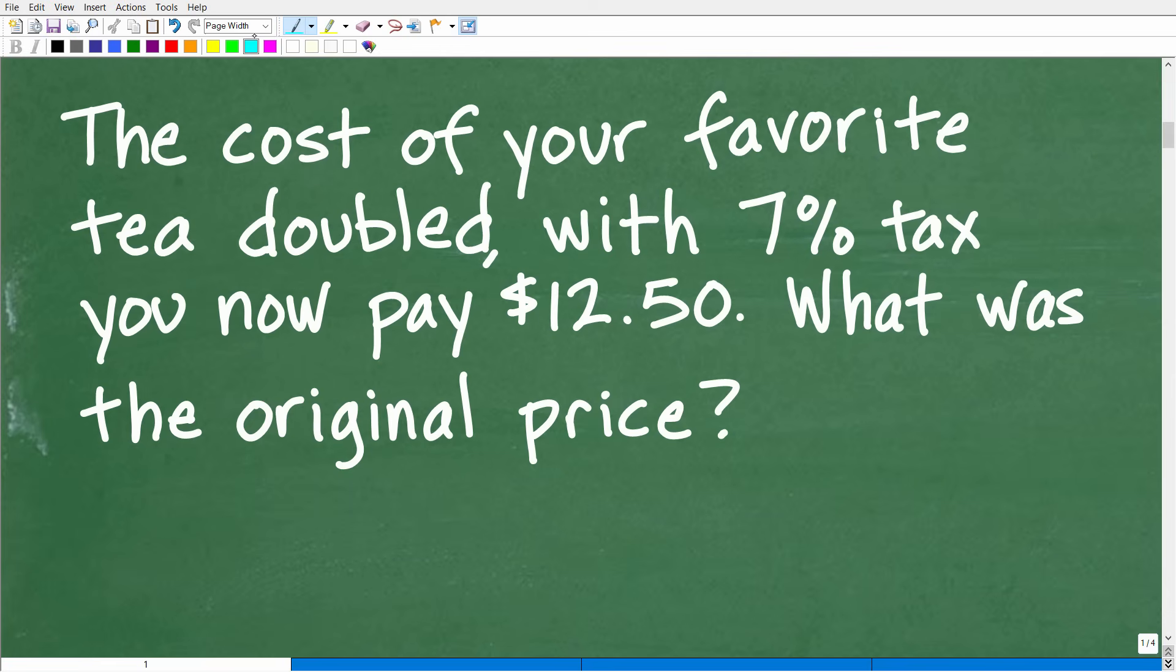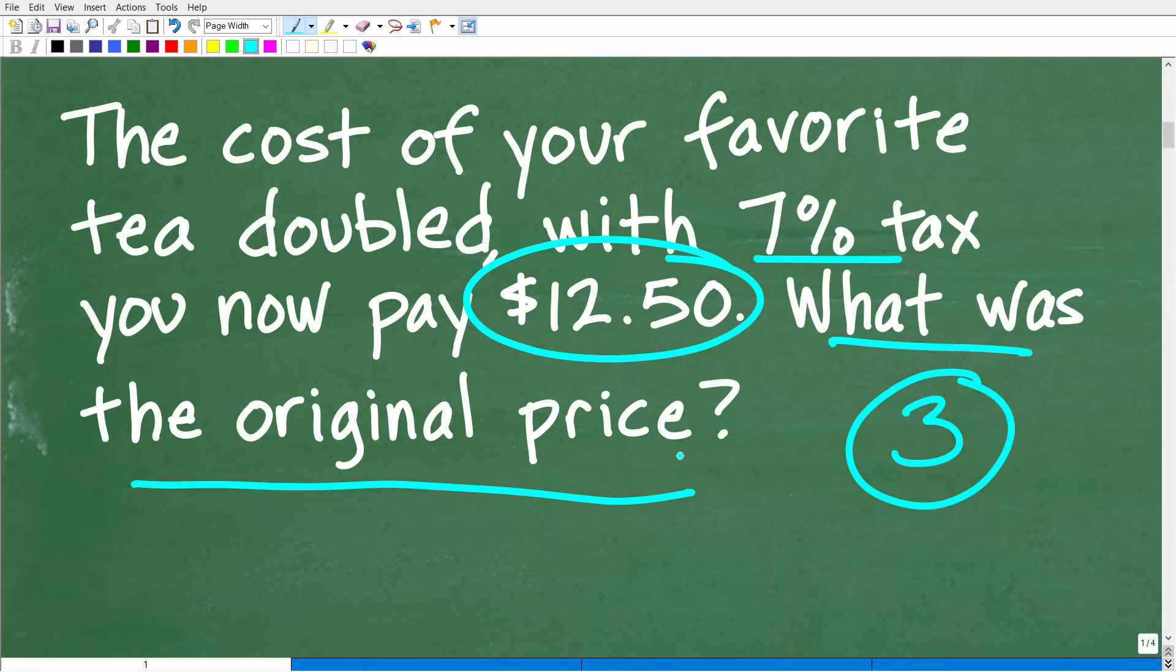Okay, so here is our problem. And of course it is a math word problem. But with any problem, you want to read it at least three times to make sure you understand what's going on. So we have this tea that doubled in price. And then we went to the checkout counter and they added 7% tax. And so your grand total for this tea now is $12.50. What was the original price? So we want to find out the original price without the tax.